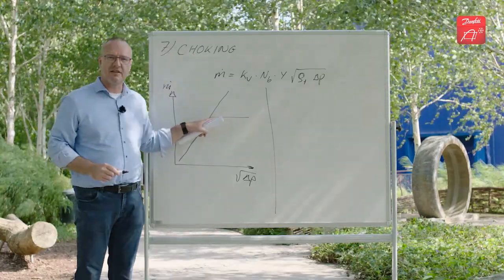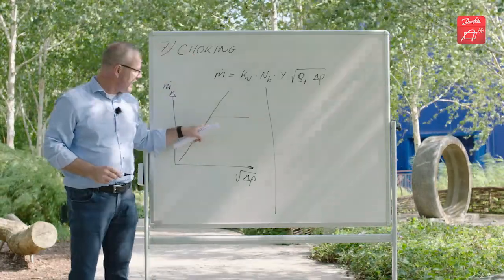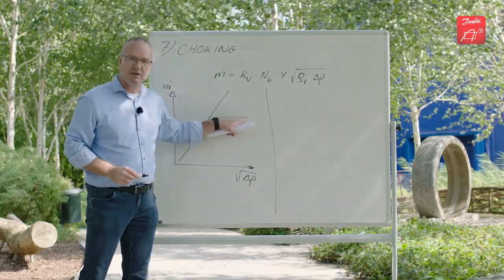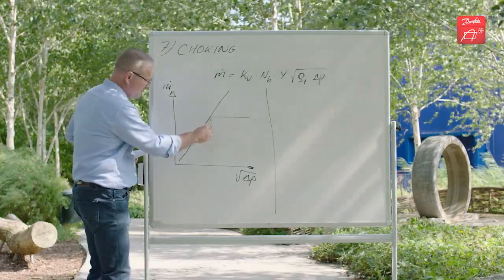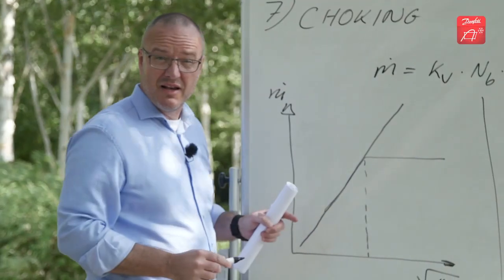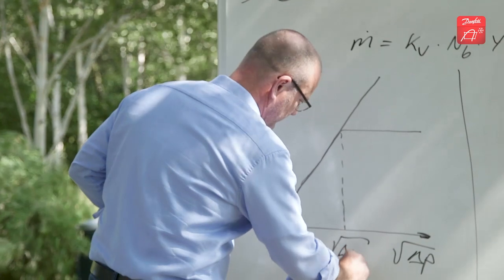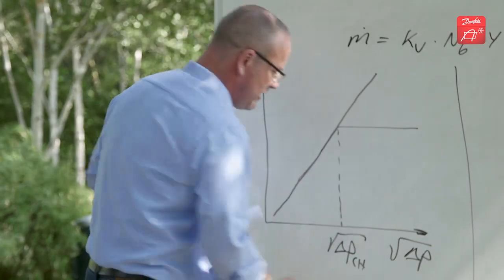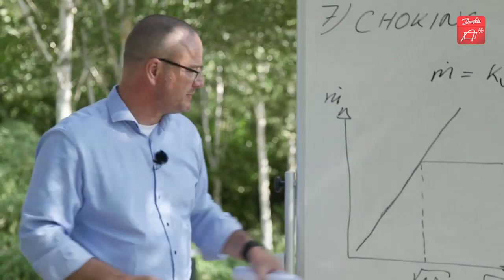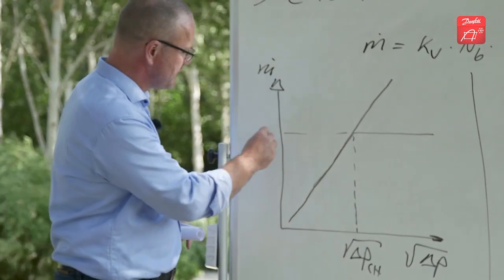What you find is that the mass flow turns off and you will have a maximum value of the mass flow. The value of the pressure drop where this happens we call the choking pressure drop and the choking mass flow.